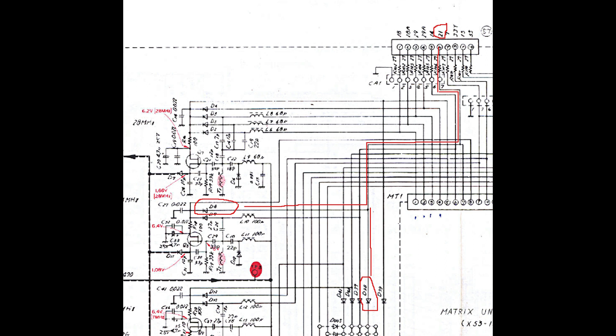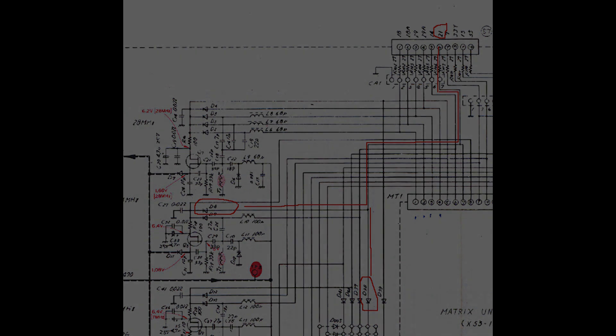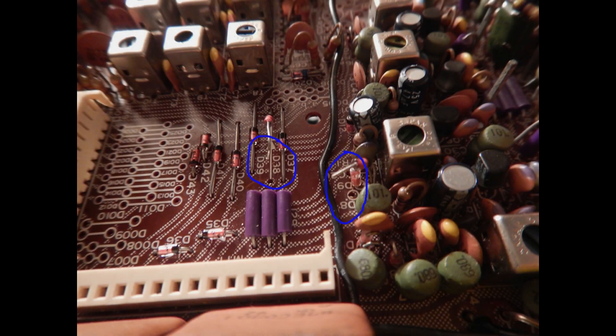Looking at the schematic, the only components that could be leaking are D8 and D38. The capacitor array CA1, right under the band switch connector, could, in theory, be leaking internally. But there is a very unlikely fault. So I have lifted D8 and D38. In this way I can check which one is leaking. So let's see.